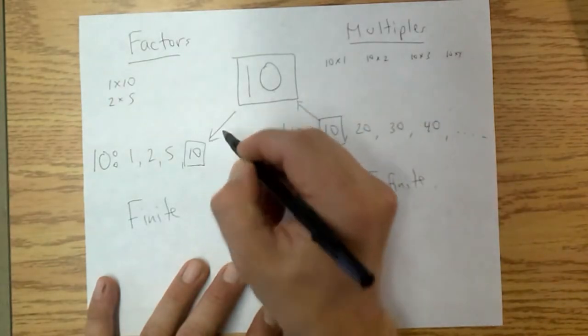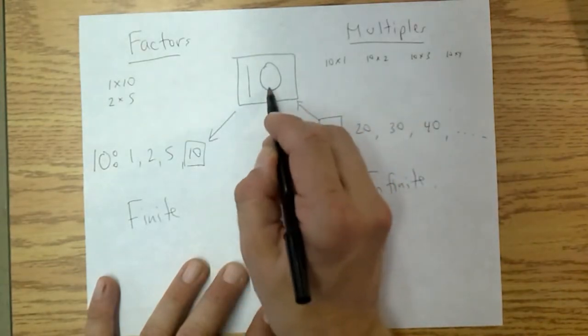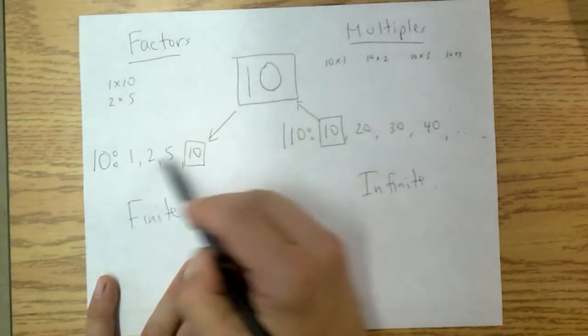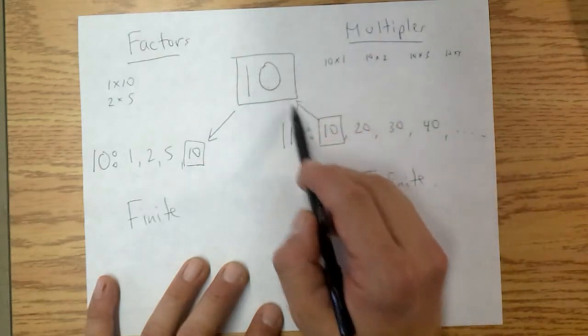In terms of factors, the number itself is the largest factor of itself. So always remember factors are smaller than the number and multiples are larger.